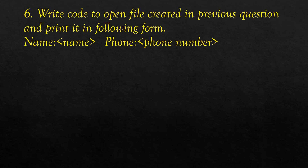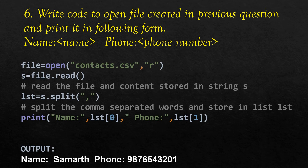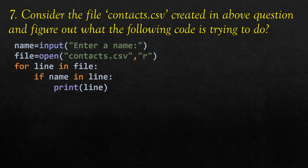The next question asks to write code to open the file created in the previous question and print it in the form of name and phone number. We open contacts.csv in read mode and use the read method to store the content in a variable s. We apply a split function on s using a comma separator, storing the result in a list variable lst. We print lst[0] as the name and lst[1] as the phone number.